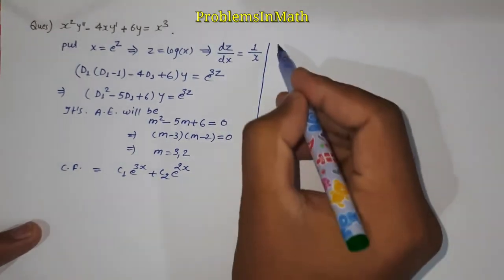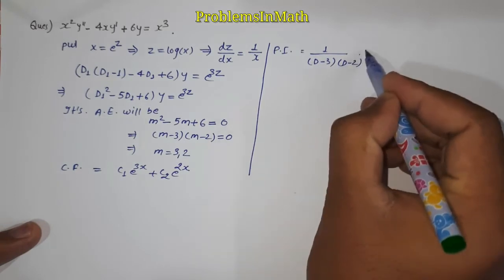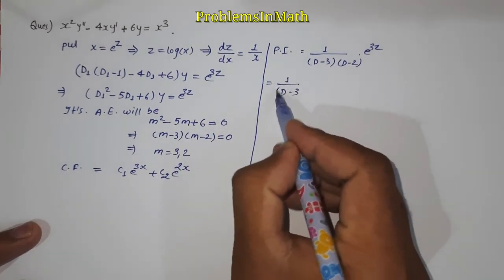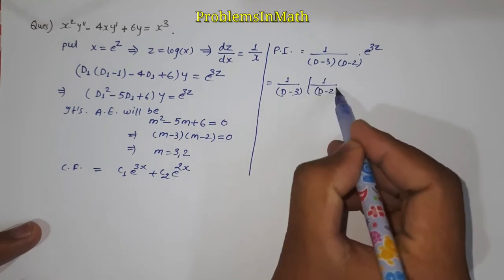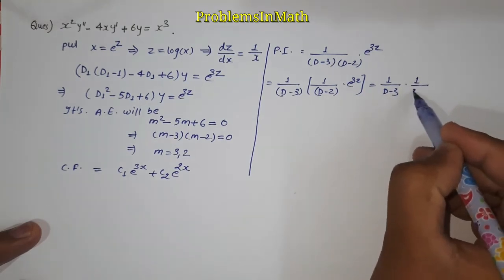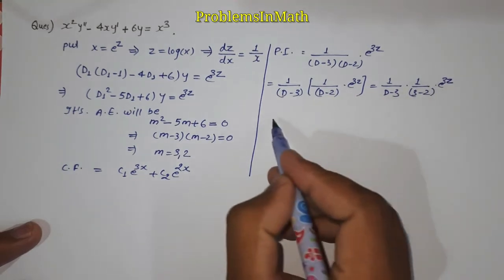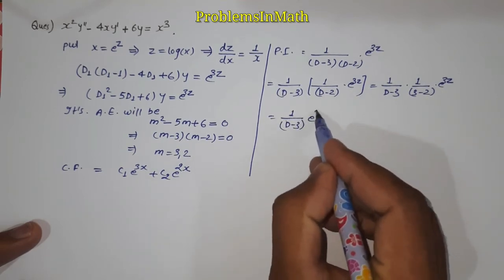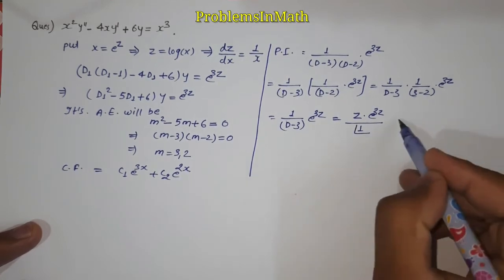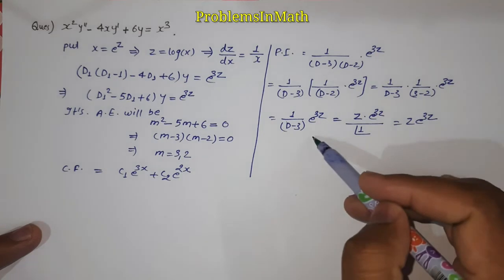Now I am going to find the particular integral. So here 1 upon (D minus 3)(D minus 2) times e to power 3z, which is 1 upon (D minus 3) times 1 upon (D minus 2) e to power 3z, which equals 1 upon (D minus 3) times 1 upon (3 minus 2) e to power 3z. So 1 upon (D minus 3) e to power 3z is equal to z e to power 3z.